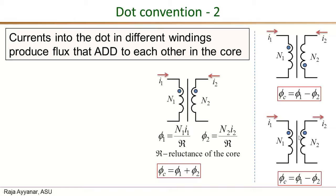For this dot configuration, I₁ enters the dot in the primary winding while I₂ is leaving the dot on the secondary side. This is the case in most power transformers — for example, in forward converters, full bridge converters, and so on. This secondary current is more like the load current. When a load current leaves the dot, a corresponding load current component is drawn on the primary side entering the dot, and their flux contributions cancel each other, leaving only the flux due to the magnetizing current. So once again, Φ_C is Φ₁ minus Φ₂.